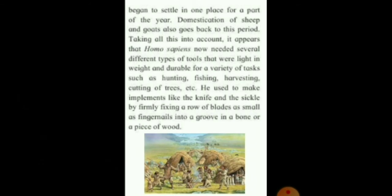Taking all these into account, it appears that homo sapiens now needed several different types of tools that were light in weight and durable — durable means strong — for a variety of tasks such as hunting, fishing, harvesting, and cutting of trees. They used to make implements like the knife and the sickle by firmly fixing a row of blades as small as fingernails into a groove in a bone or a piece of wood. A sickle is used for cutting long grass, corn, etc. A groove is a long deep line that is cut in the surface of wood.